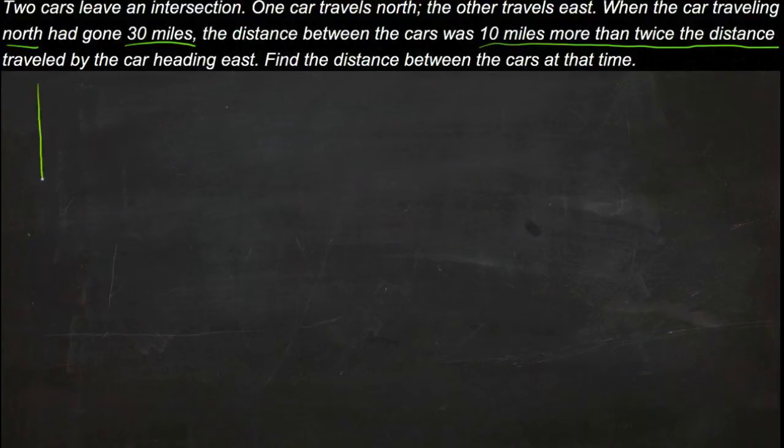So we have one car heading north, and he goes 30 miles. Wow, that was a weird arrow, wasn't it? He goes 30 miles, and then one car heading east, and he goes, we don't know how many miles, so we'll call that x.